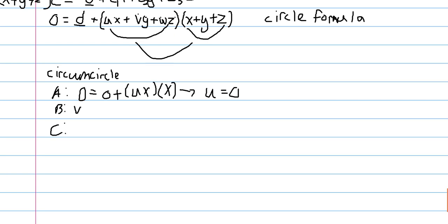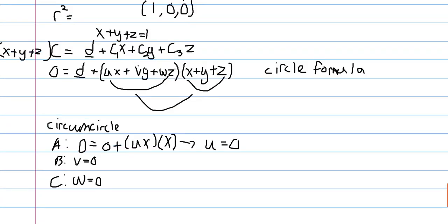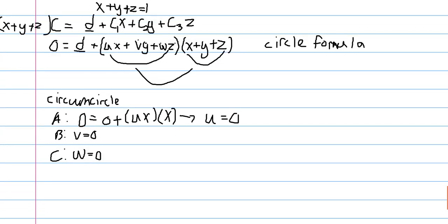And we can do the same trick for B and C. And we will get that V is equal to 0. And that W is equal to 0. So this whole term right here for the circumcircle is 0. Meaning that we just have 0 equals D underline.